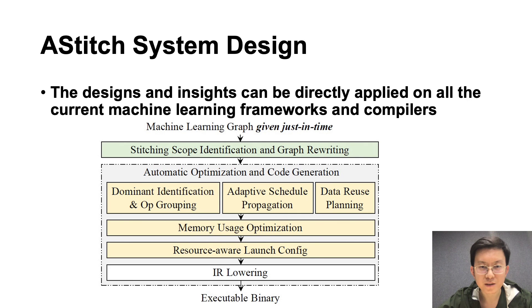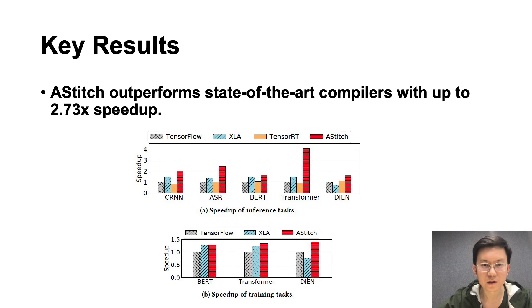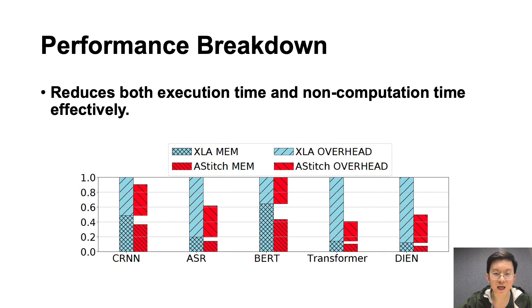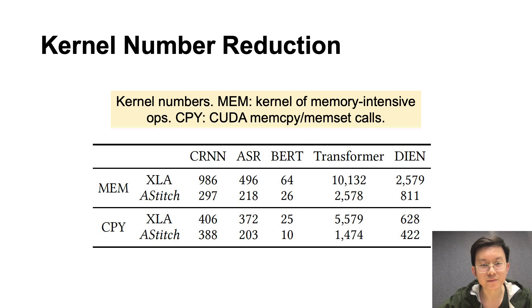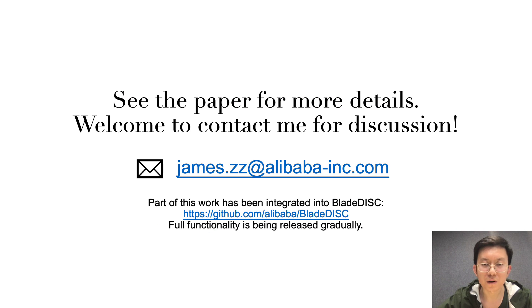We implement iStitch as a TensorFlow plugin. Users only need to set some environment variables to enable iStitch for a TensorFlow model without modifying the model script. The insight in this work can be applied to all machine learning frameworks and compilers. iStitch outperforms state-of-the-art compilers with up to 2.73× speedup. The baselines include basic TensorFlow, XLA for both inference and training, and TensorRT for inference. Performance breakdown shows that iStitch reduces both execution time and non-computation time effectively, with increased parallelism and decreased kernel count. You can see the paper for more details. Welcome to contact me for discussion. Thank you.